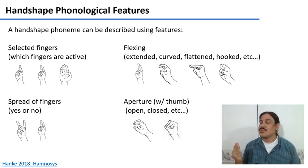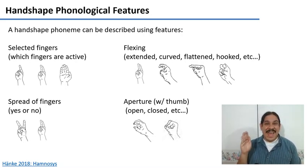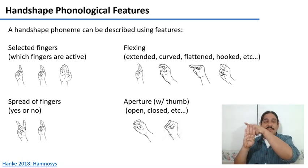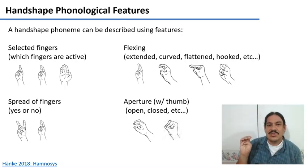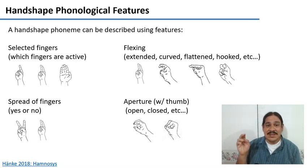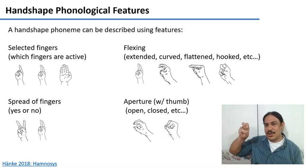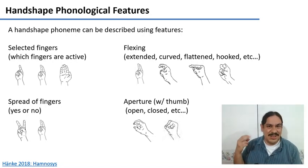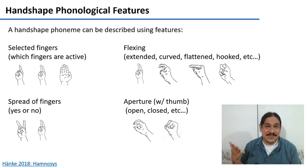For example, the feature of selected fingers, which are which of the fingers are active in the sign. You can have just the index, these two, these four, etc. There's the feature that tells you which are the fingers that are engaged in the sign. There's the feature of flexing, which tells you what the fingers are doing. They might be extended, curved, flattened, hooked, and there's several other positions. There's other values that this feature can take.